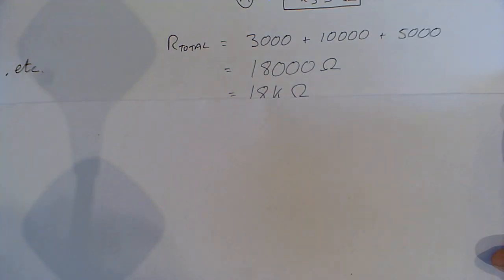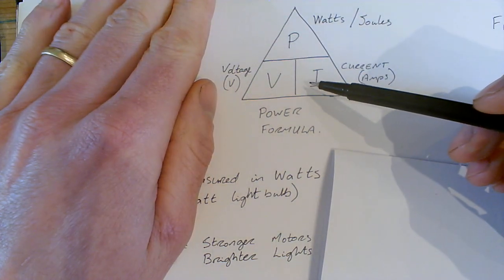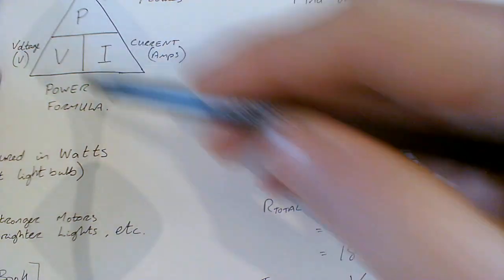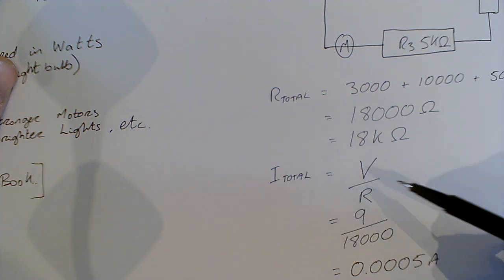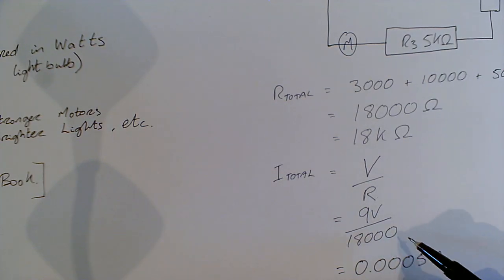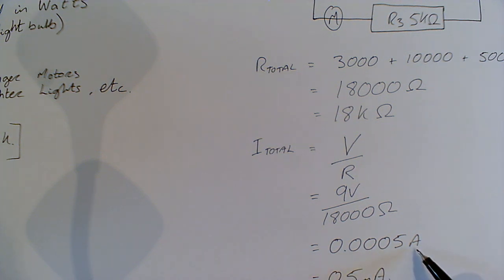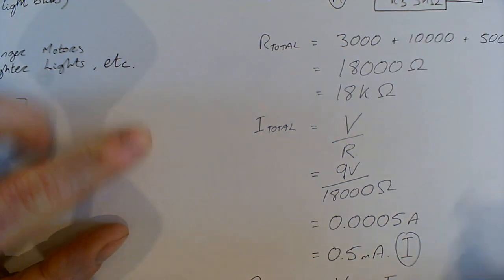We want to find our power. If I go to our power triangle, nowhere is there anything about resistance. We just calculated total resistance, but I can't use it. What we can do is calculate the total current. We have got a voltage of 9 volts and a total resistance. Our 9 volts divided by 18,000 ohms equals 0.0005 amps or 0.5 milliamps.